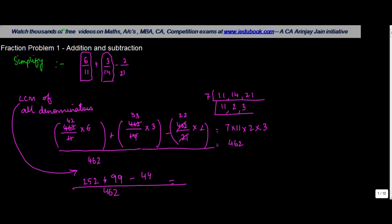So what do we get here? 252 plus 99, 351 minus 44 will give you 307 upon 462, which is the answer in a simplified form of this complex fraction.